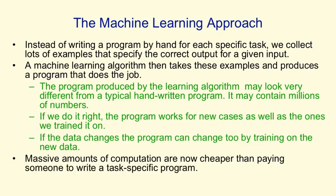Now, massive amounts of computation are cheaper than paying someone to write a program for a specific task. So we can afford big, complicated machine learning programs to produce these task-specific systems for us.